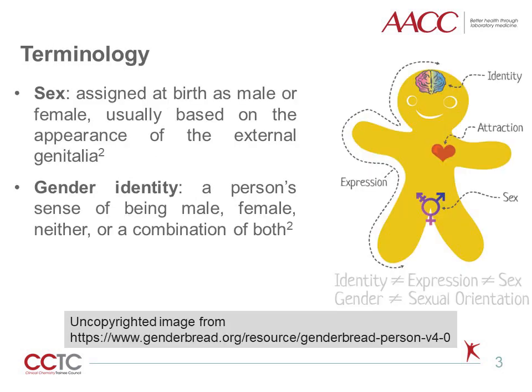This figure encapsulates a number of key ideas. Sex is assigned at birth as male or female, usually based on the appearance of the external genitalia. Chromosomal sex and internal organs may be considered if the external genitalia are ambiguous. In contrast, gender identity is a person's sense of being male, female, neither, or a combination of both. This can be congruent or incongruent with an individual's sex assigned at birth.